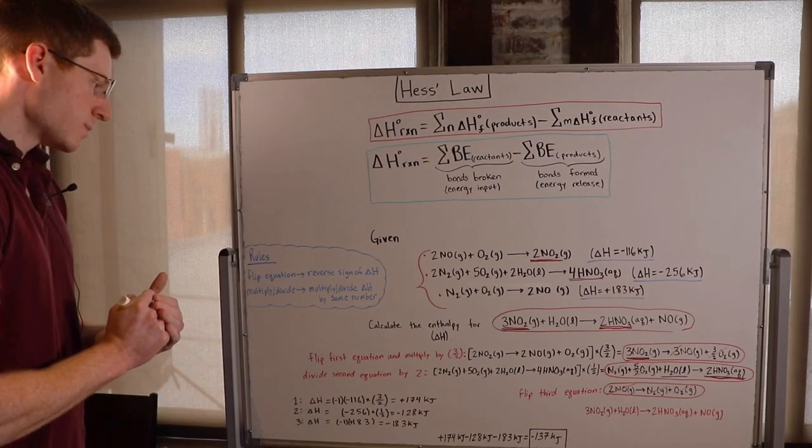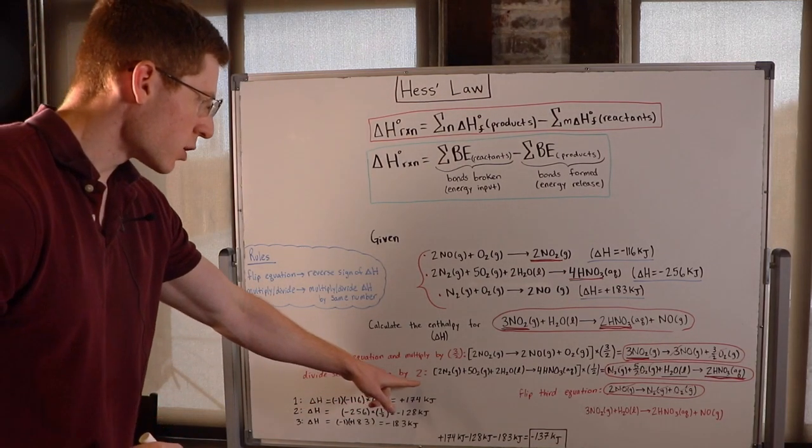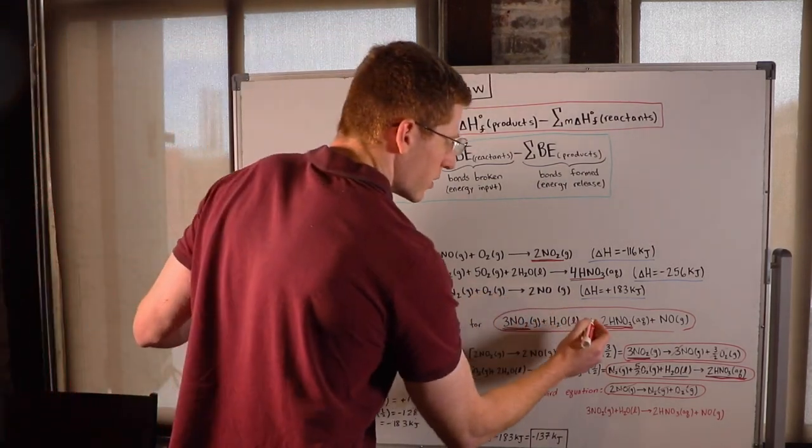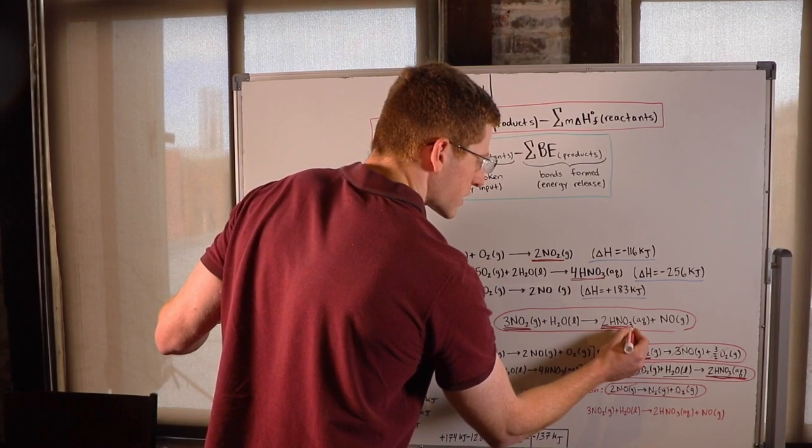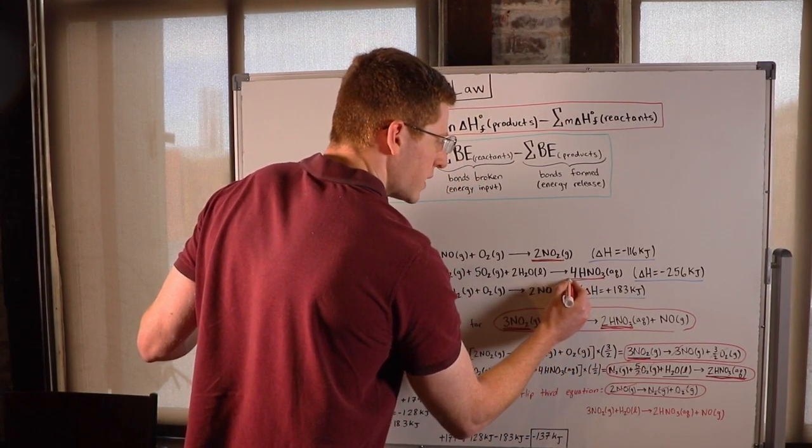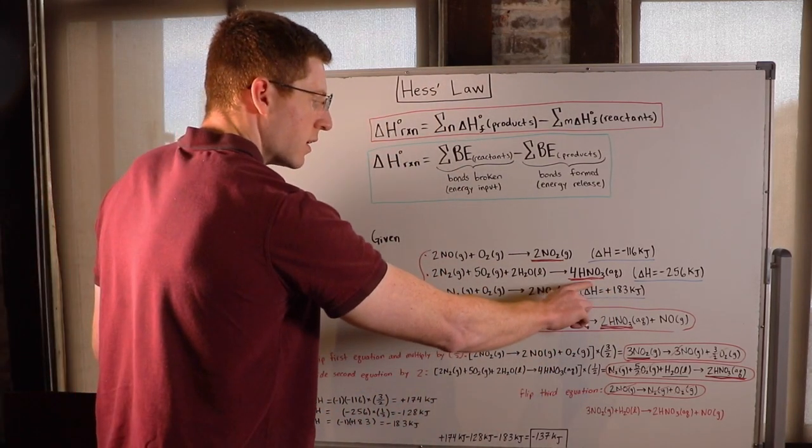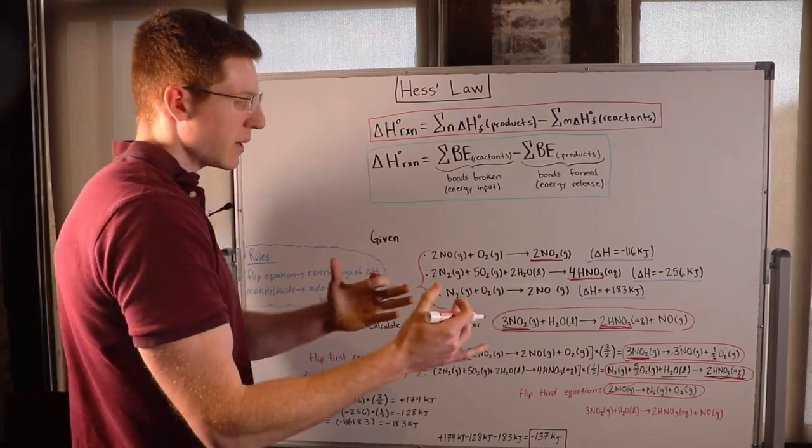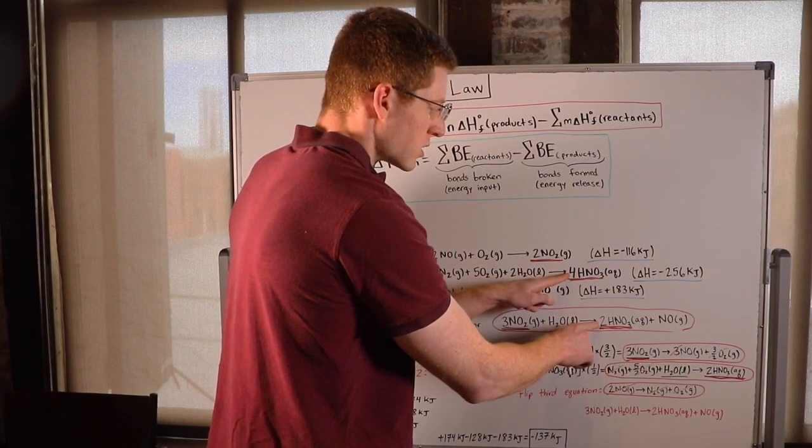So what's the next thing I should do? Well, if you notice, I divided this second equation by 2. And let's see why I did that. So I noticed I needed an HNO3 in my product side. And I see that the only HNO3 in my sample equations appears right here. But it's a 4 instead of a 2. So this time I didn't have to flip anything. It's already on the product side like I need it. But it's got a 4 instead of a 2.